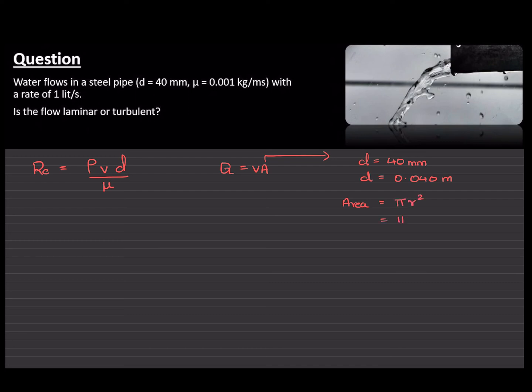And that will be pi times 0.040 over 2, the entire thing, the whole square. Why divided by 2? Because it's pi r square. The diameter divided by 2 will give us the radius. Working this out will give us the area to be 0.00125 meters square.